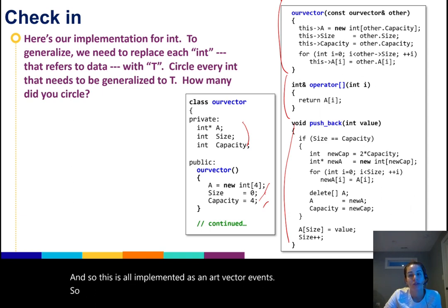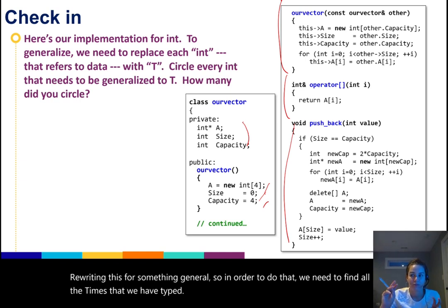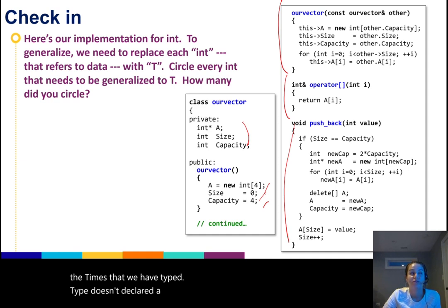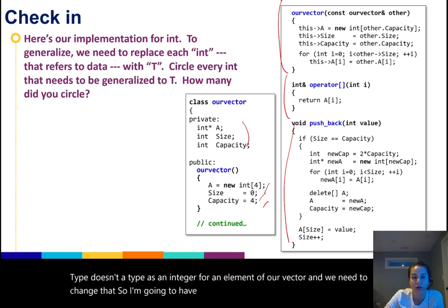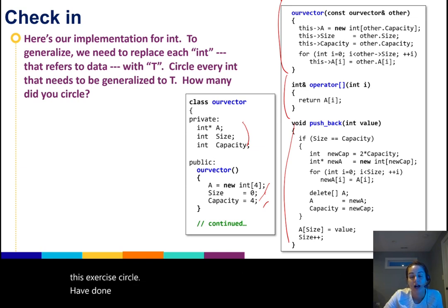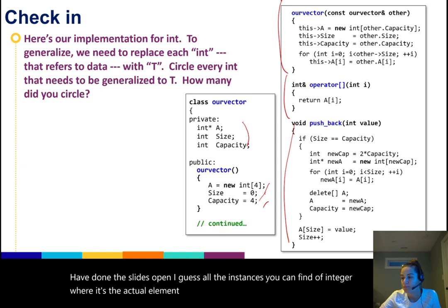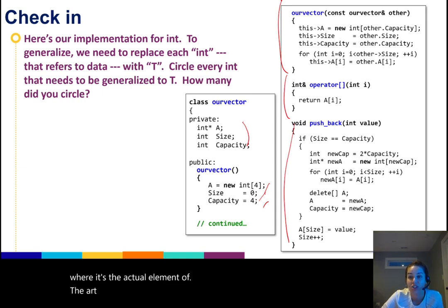So how would we go about rewriting this for something general? In order to do that, we need to find all the times that we have typed, typed as in declared a type, as an integer for an element of our ourvector, and we need to change that. So I'm going to have you pause the video and go ahead and do this exercise. Circle all the instances you can find of integer where it's the actual element of the ourvector, not just any integer. And then go ahead and start the video again when you're ready.